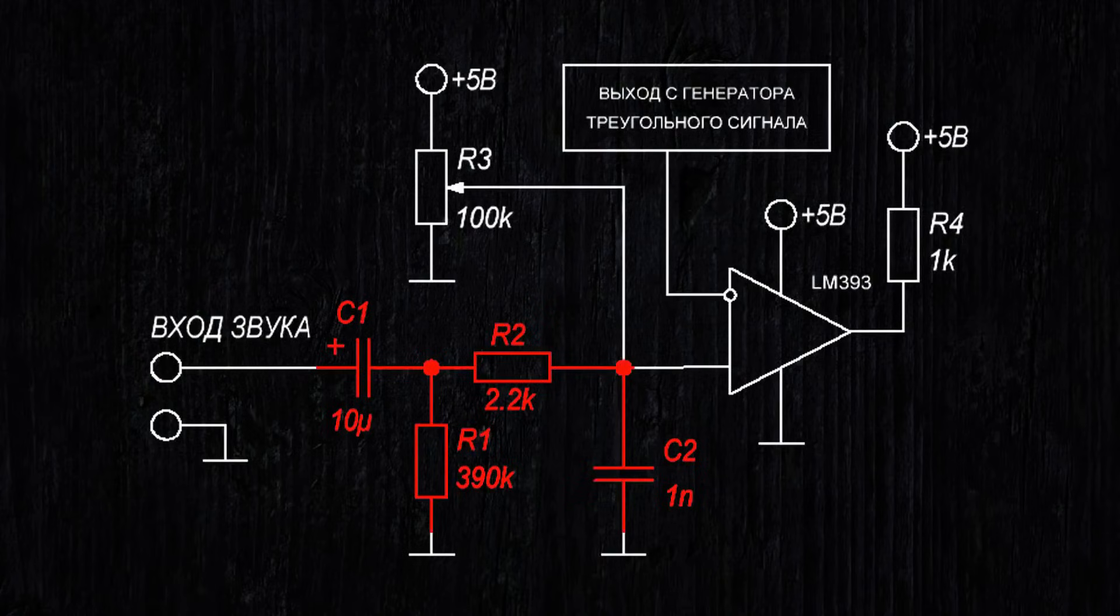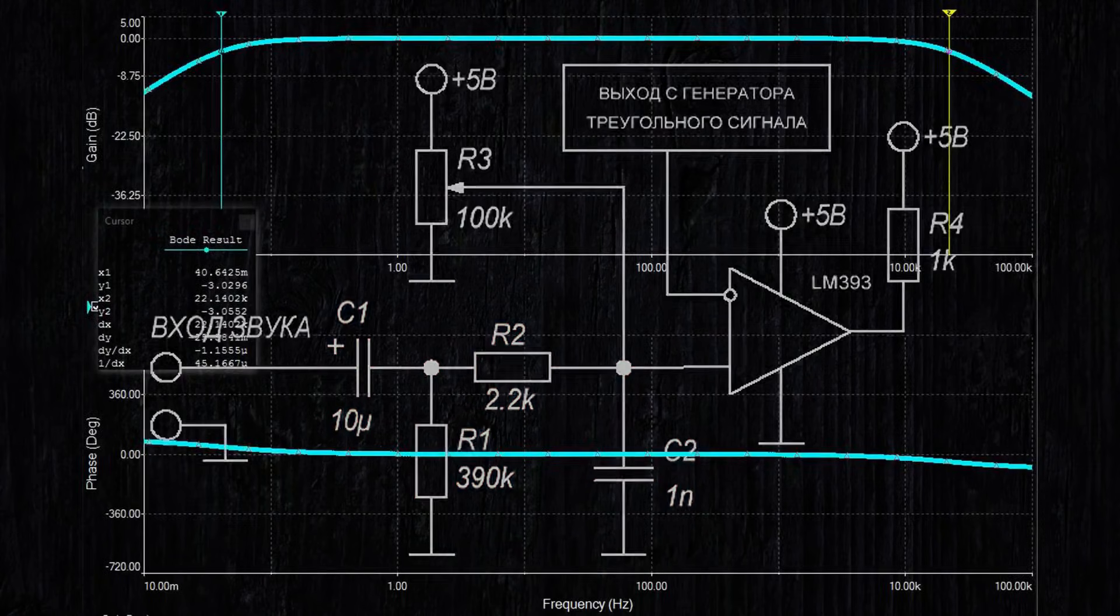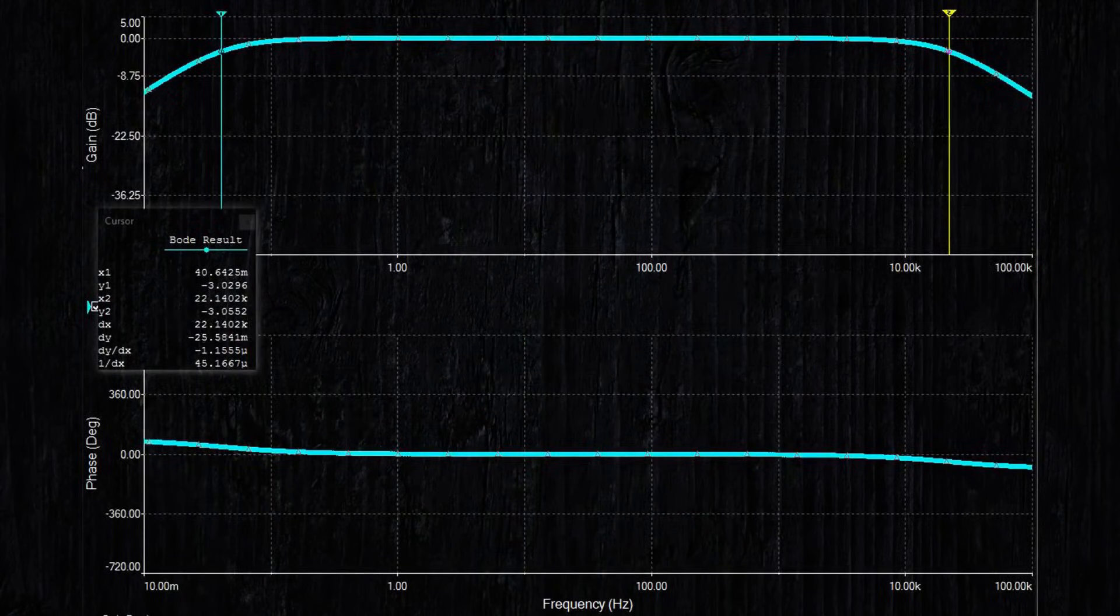This part of the circuit represents a filter that cuts off high frequencies. For the values shown in the diagram, the frequency response turned out as follows. It is mainly used to prevent high-frequency signals from entering and exiting the sound source.